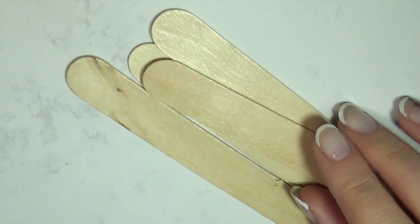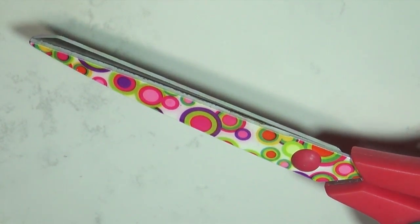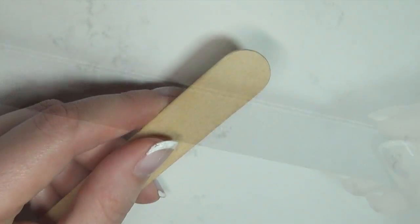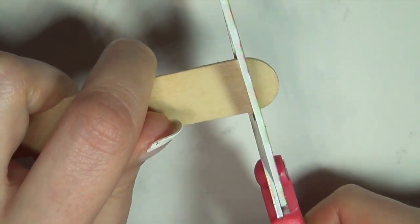The first thing you're gonna need is some popsicle sticks, a pair of scissors and a file. Cut your sticks to the size you need them and file away any rough edges.